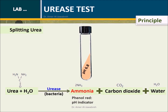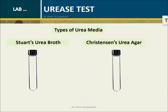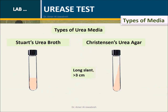With the presence of phenol red as a pH indicator, the media changes color from light orange to pinkish. There are two types of urea media: first, Stewart's urea broth; second, Christensen's urea agar. The agar has a long slant but a shallow butt. The butt acts as a color control.